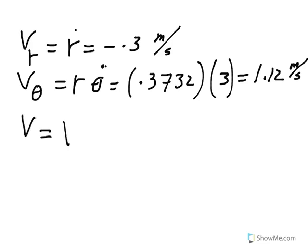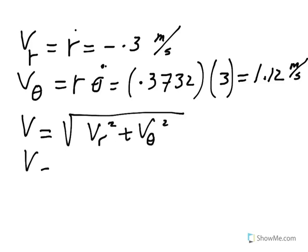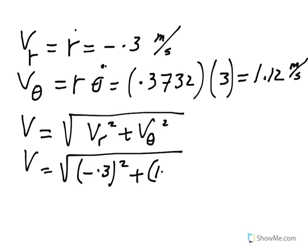Now magnitude of velocity would be square root of V sub r squared plus V sub theta squared. If you go ahead and do this, V sub r is minus 0.3 and V sub theta is 1.12. This should give us a magnitude of velocity at that particular angle theta equals 30 degrees to be 1.16.